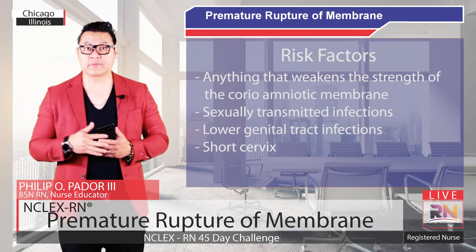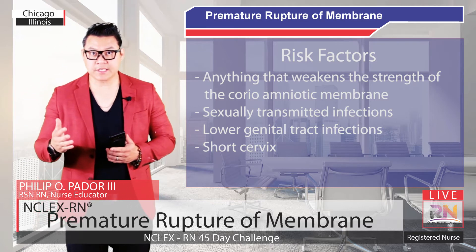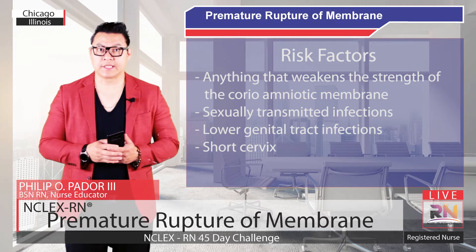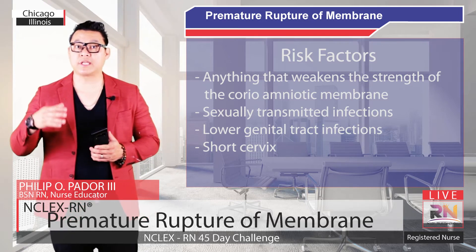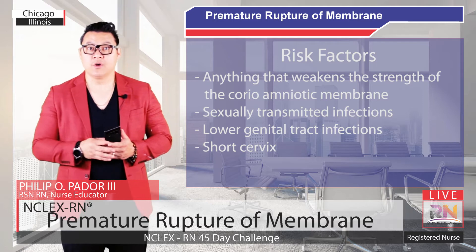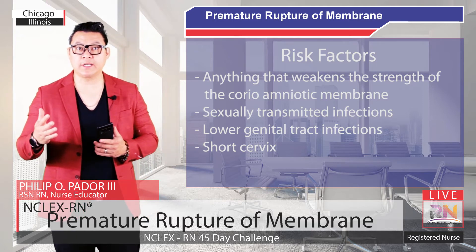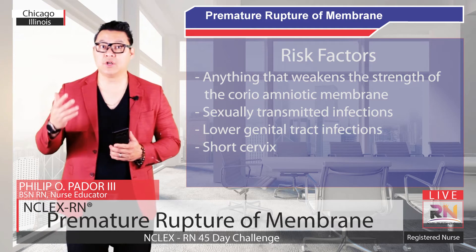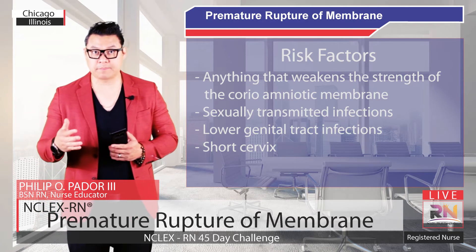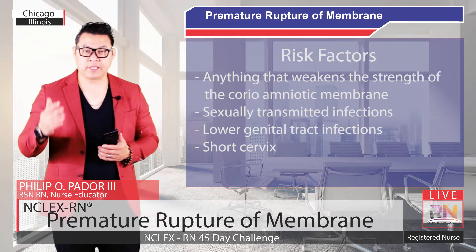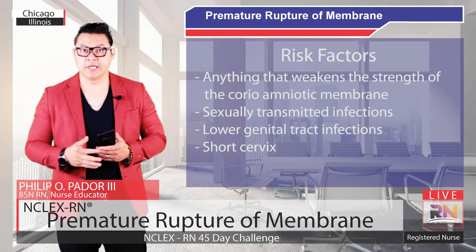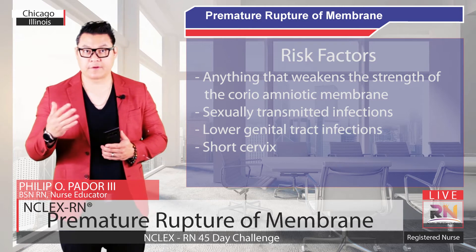What are the risk factors for PPROM? Anything that weakens the strength of the chorio-amniotic membranes. Here is the uterus, here is the cervix, and this is the chorio-amniotic membrane. Ascending infections from the vagina will weaken the membranes. Sexually transmitted infections and other lower genital tract infections such as bacterial vaginosis play a role as risk factors. This is also why a short cervix is a risk factor for PPROM.